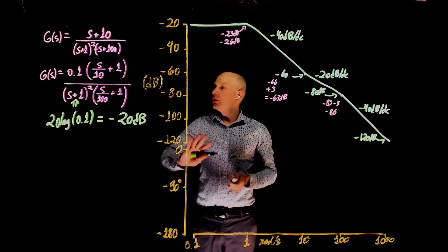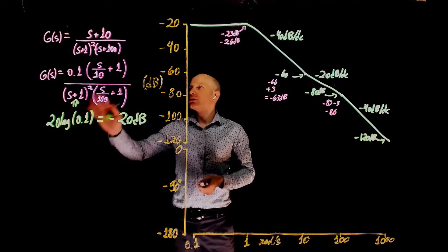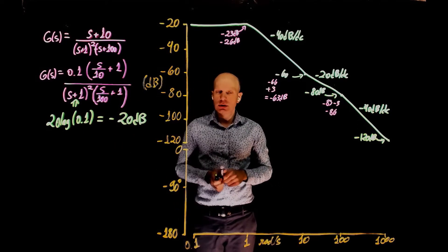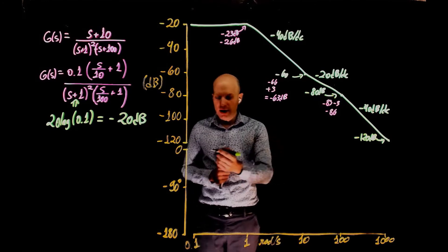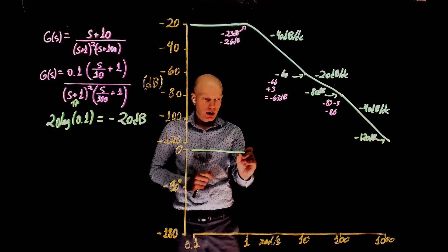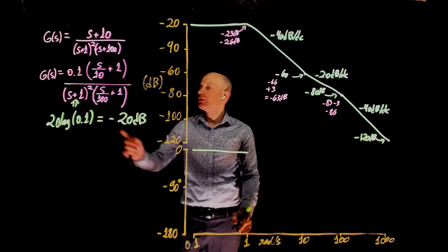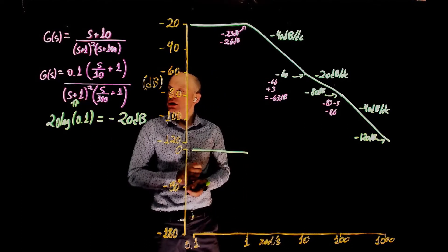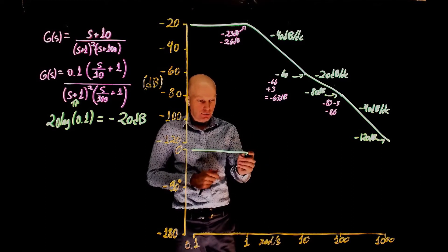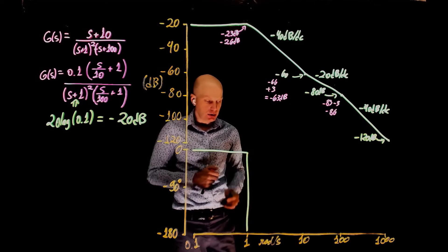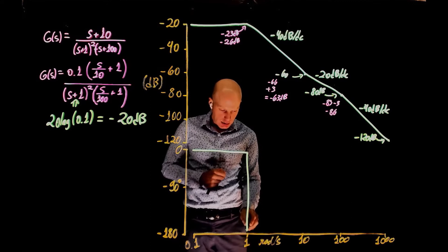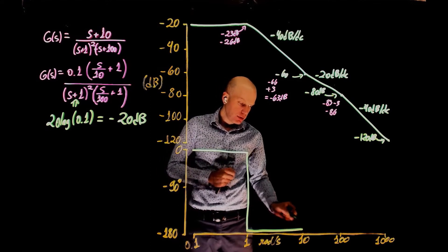Now let's look at the phase. To the left of all cutoff frequencies, we have no poles or zeros at the origin — only the gain acting on the Bode plot. So the phase at very low frequencies is 0 degrees, and it remains 0 up to the first cutoff frequency. The first cutoff frequency comes from the two poles at negative 1. Each adds negative 90 degrees to the phase, so the phase goes down by 180 degrees total, and stays at negative 180 degrees up to the next cutoff frequency at 10 rad/s.